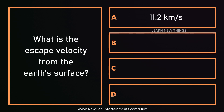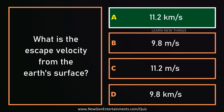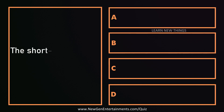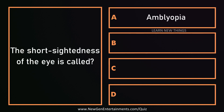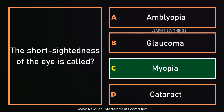What is the escape velocity from the Earth's surface? 11.2 km per second. The short-sightedness of the eye is called? Myopia.